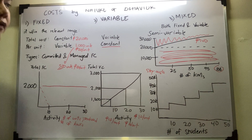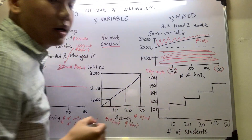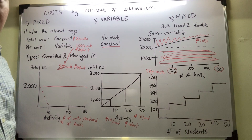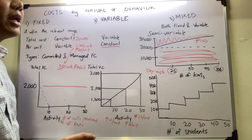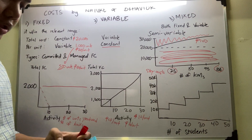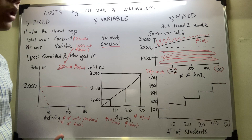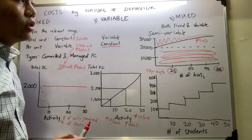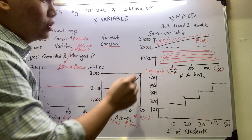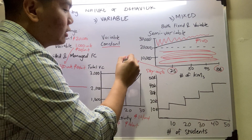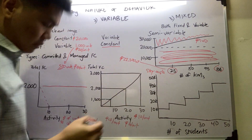What if the company only utilized it for 25 kilometers? Similarly, you multiply the level of activity — 25 kilometers — by the variable cost per unit of 100 pesos. So 25 times 100 gives a total variable cost of 2,500. Then you add the total fixed cost of 20,000 pesos, giving you a total of 22,500 pesos.